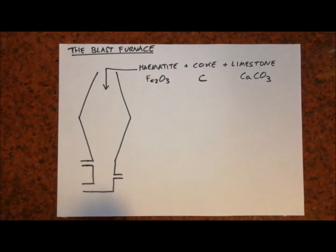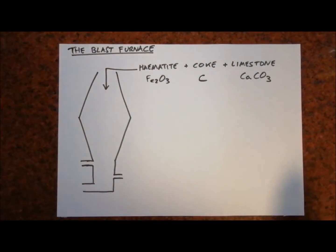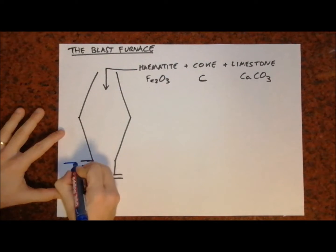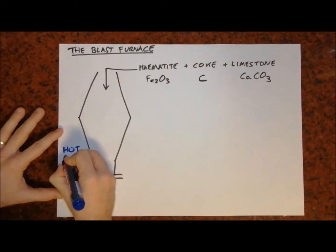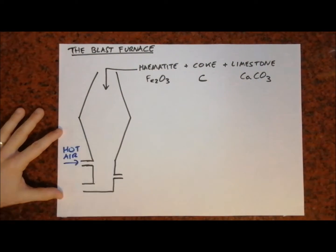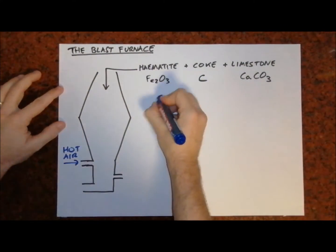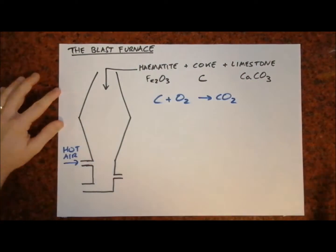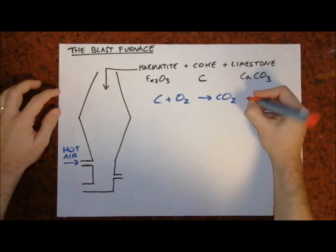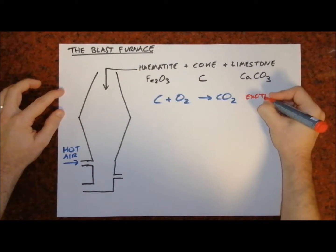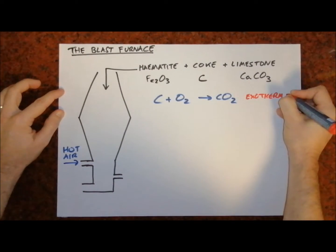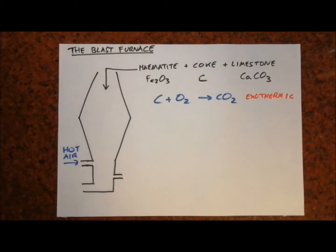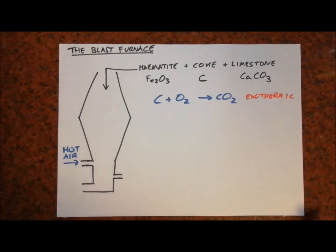First, the coke reacts with the hot air that is pumped in at the bottom to form carbon dioxide — hot air comes in here. The carbon reacts with oxygen to make carbon dioxide. This reaction is very exothermic, so it releases a lot of heat energy and allows the reduction of iron oxide to take place.